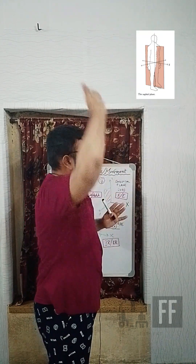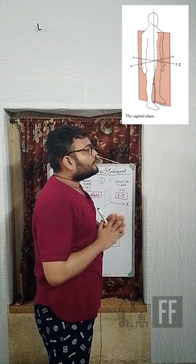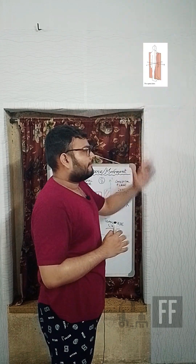The frontal plane divides the body into dorsal and ventral halves. The second plane is the sagittal plane, or YZ plane, which divides the body into right half and left half. The third plane is the transverse plane, or ZX plane.